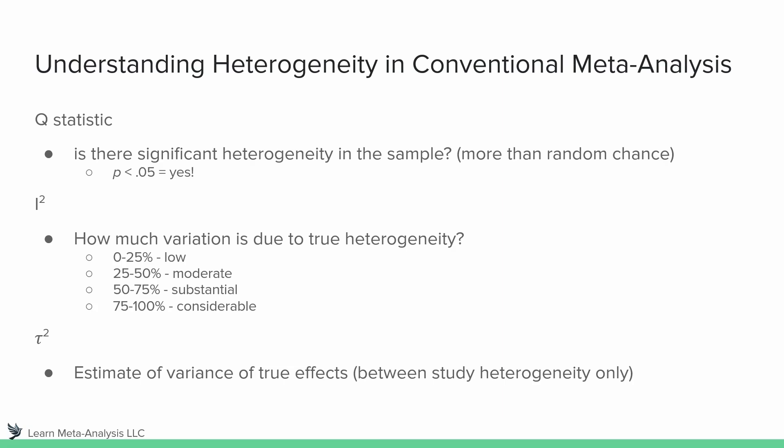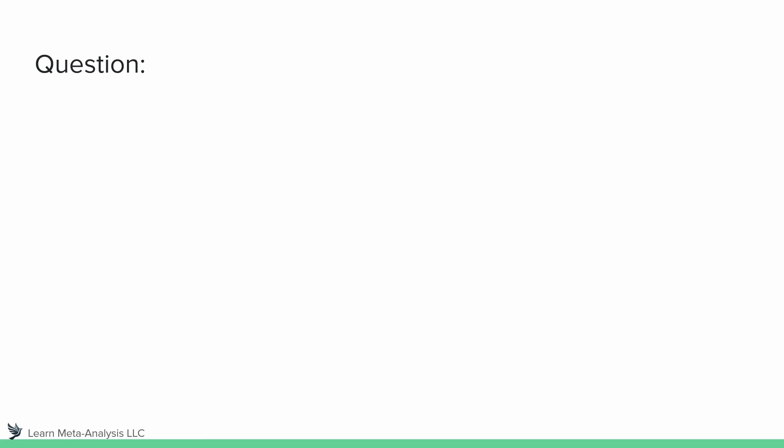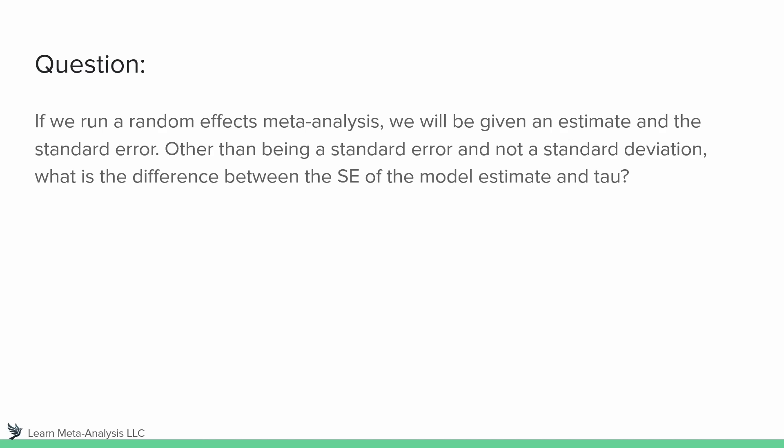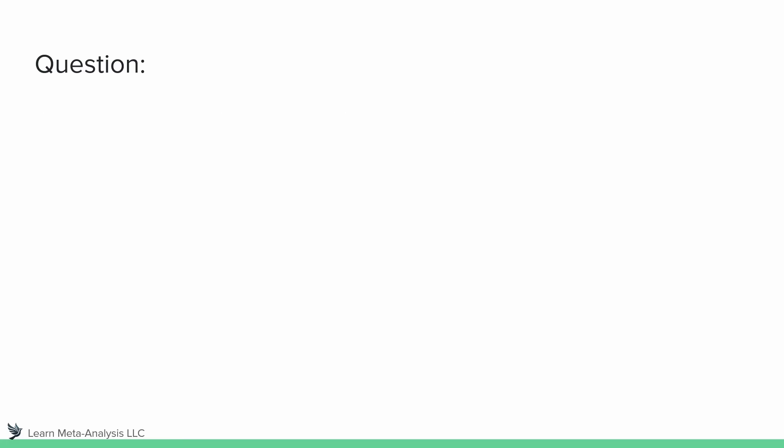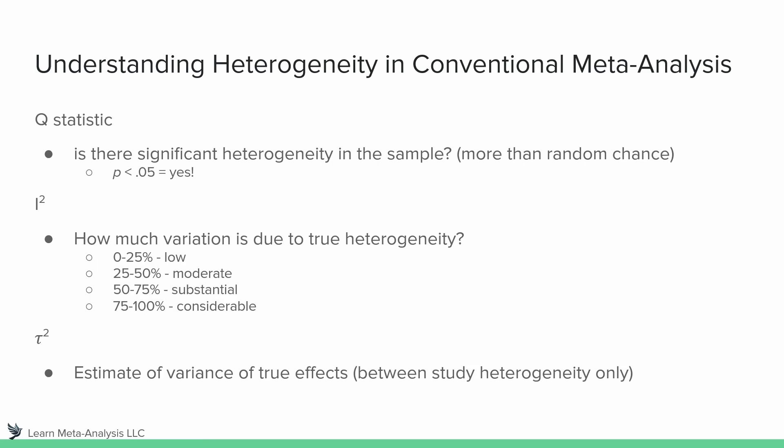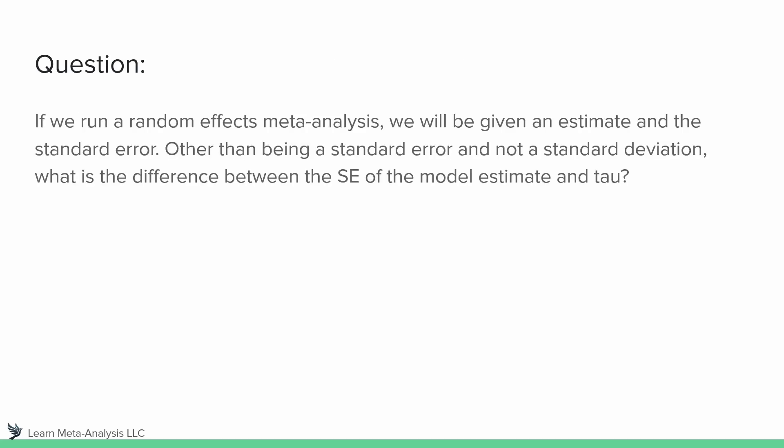Now we have these three key concepts. Before we look at what they mean, here's an interesting statistical question for the stats nerds. If we run a random effects meta-analysis, we get an overall effect size estimate and a standard error for that effect size. The question is: other than being a standard error rather than a standard deviation, what is the difference between the standard error of the model and tau? Because tau-squared is the variance, and the square root of variance is a standard deviation.